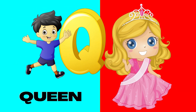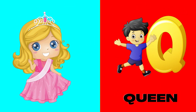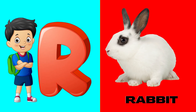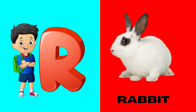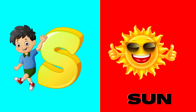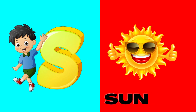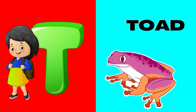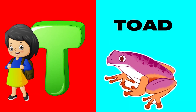Q is for queen, qu-qu-queen. R is for rabbit, r-r-rabbit. S is for sun, s-s-sun. T is for toad, t-t-toad.